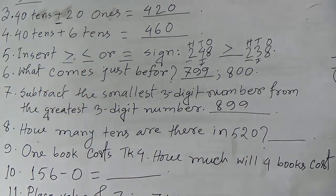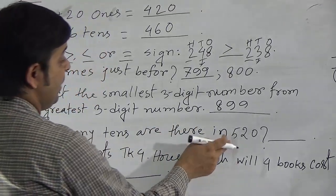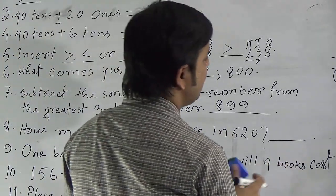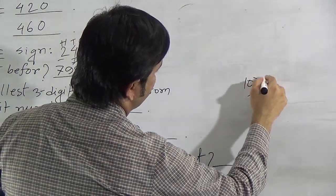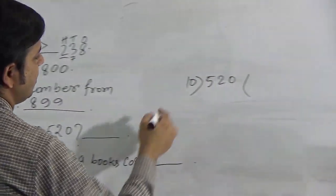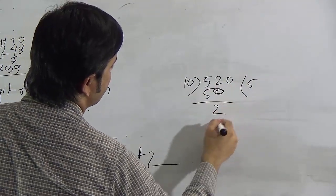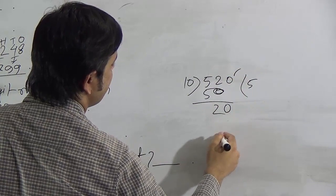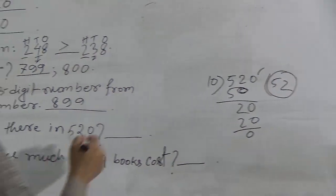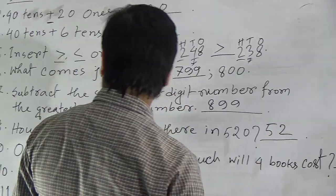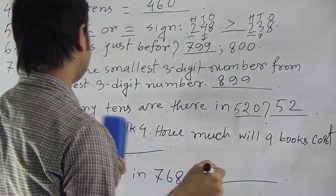Question 8: How many tens are there in 520? To get the answer, divide 520 by 10. 5 times 10 is 50, subtract to get 2, bring down the next digit 0. 2 times 10 is 20, subtract to get 0. So the quotient is 52. There are 52 tens in 520.